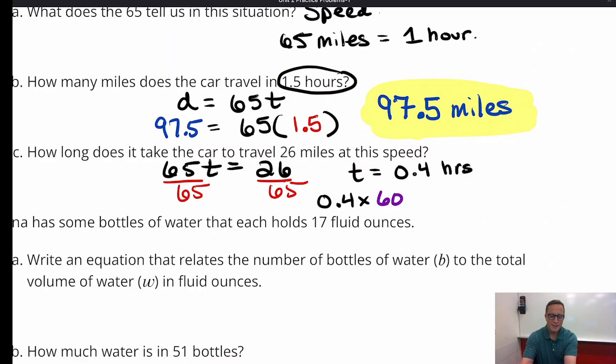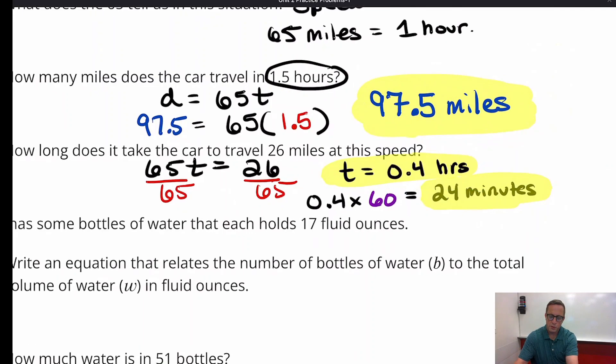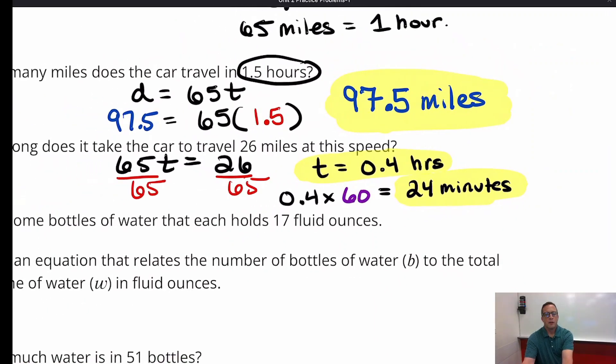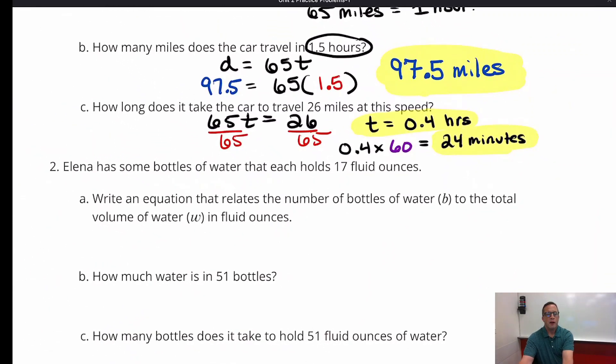So 0.4 times 60 is 24. So that's 24 minutes right there. Now, I think it doesn't necessarily say, so I think both answers are fine. Both answers are great. But just, you know, I think it's important you know how to do both. Alright, so we're done with that one.